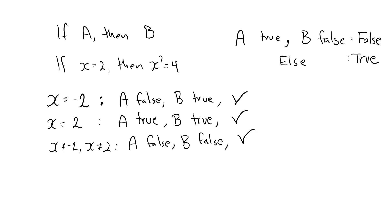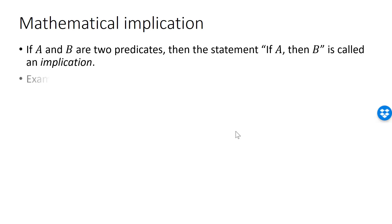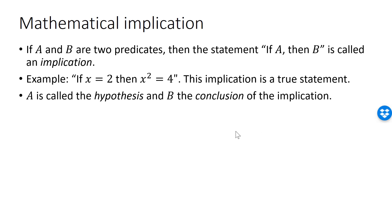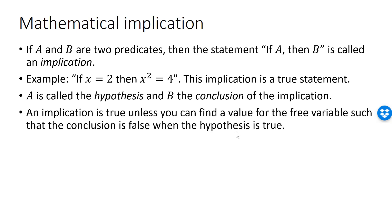Note that for our example, the implication is true no matter what the value for the free variable is. Even though, technically speaking, an implication is a predicate, the convention is to view an implication as a statement. Viewed as a statement, an implication is true if it's true for all possible values of the variable x. For example, if x is equal to 2 then x squared is equal to 4 is a true statement. This means that an implication is true unless you can find a value of the variable x for which the hypothesis is true while the conclusion is false. Most statements in mathematics are implications, which is why it's important to fully understand them.